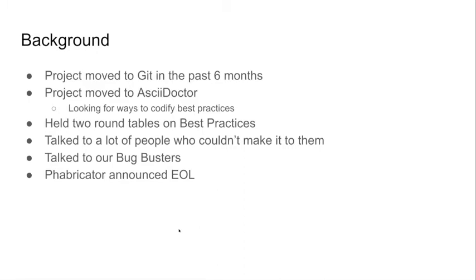We needed to get our users used to the new locations, get all the documentation updated, and get all the internal project processes that were pulling from Subversion now pulling from Git. There was a lot more there than I had anticipated. I held a couple of best practices roundtables hoping to identify what works. The project recently moved to AsciiDoc, and I found I could write AsciiDoc docs where I had trouble writing DocBook docs.